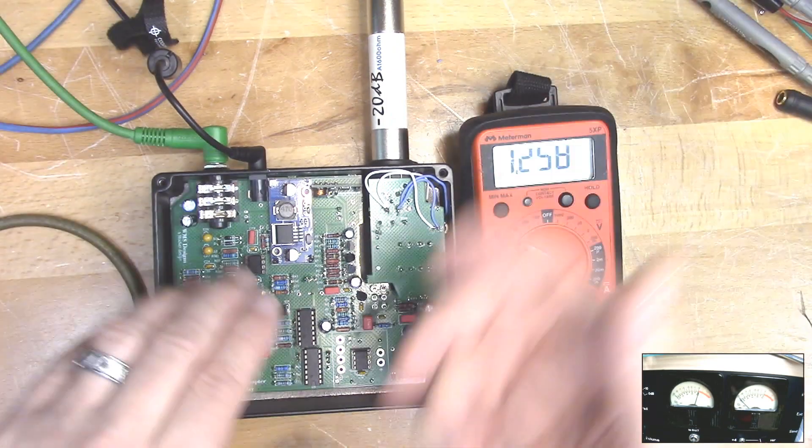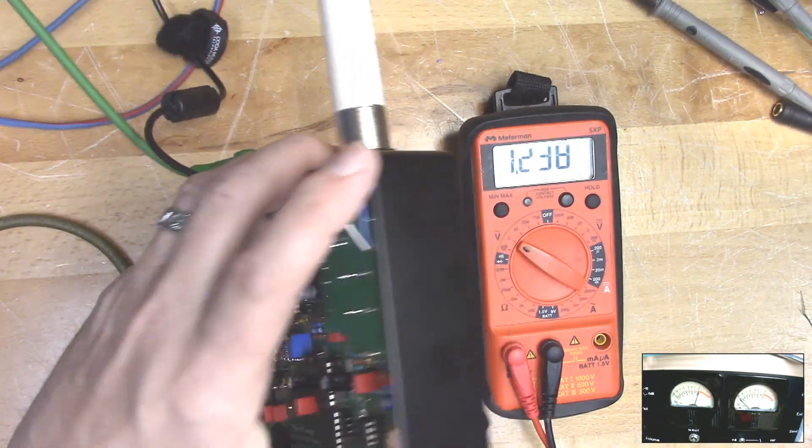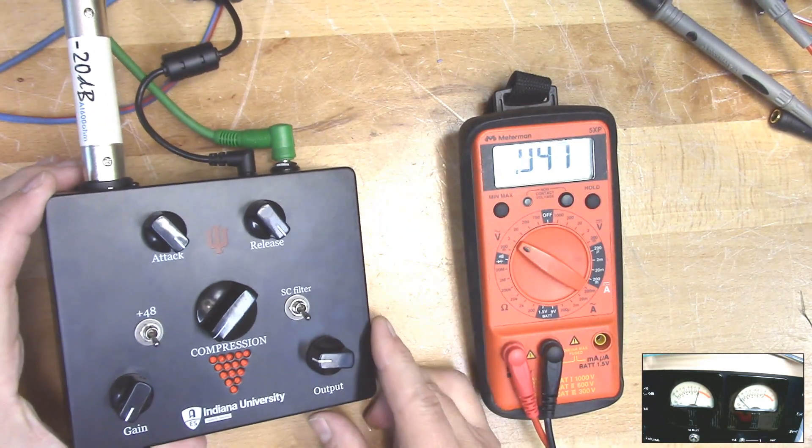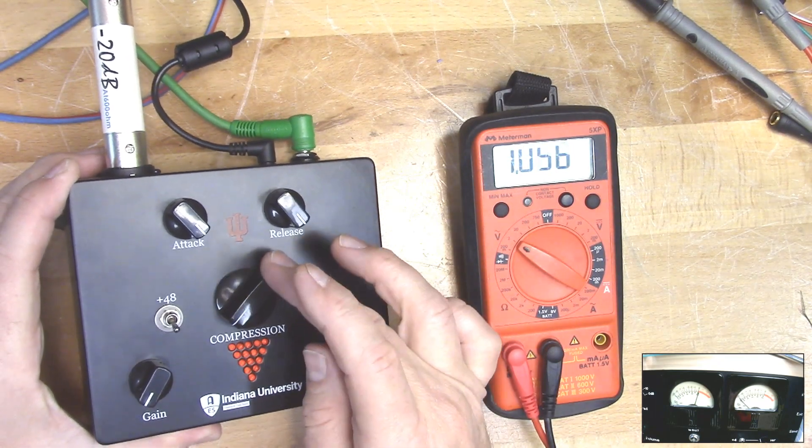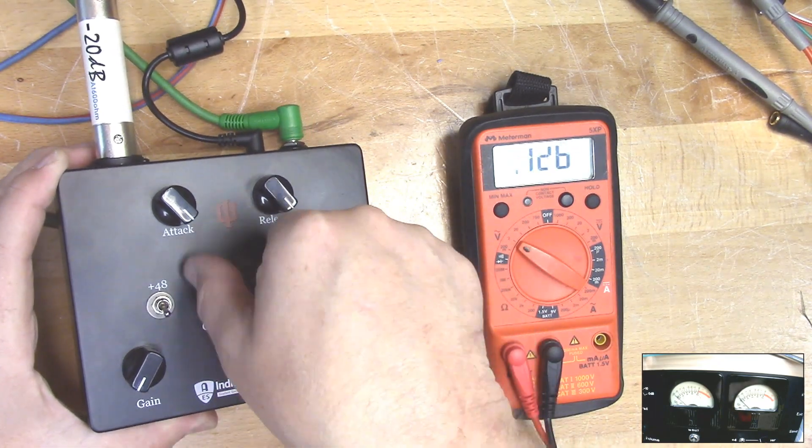And I know that I am sending plus four dBU into it. So now if you want to, you can check. I know I'm getting signal because compression is lighting up.